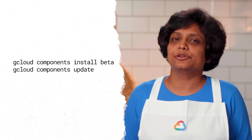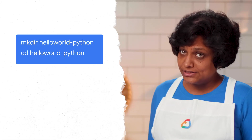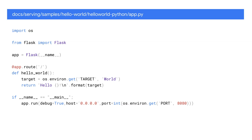To deploy, you can use any web app of your choice. For the purpose of this demo, we will create a Hello World web application in Python and then deploy it using Cloud Run. Create a directory using mkdir hello-world and cd into it. Then create a file named app.py and paste this code into it. This code creates a basic web server that listens on the port defined by the port environment variable.